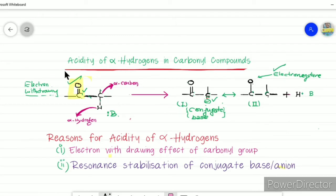Hello friends, I am speaking of acidity of alpha hydrogen in carbonyl compounds. Carbonyl is a group that is adjacent to carbon, and the alpha carbon has hydrogen.